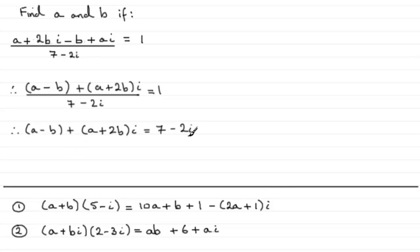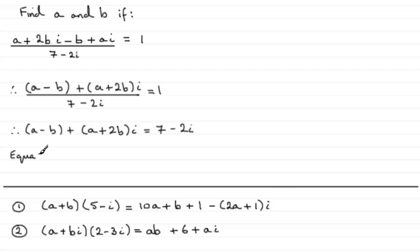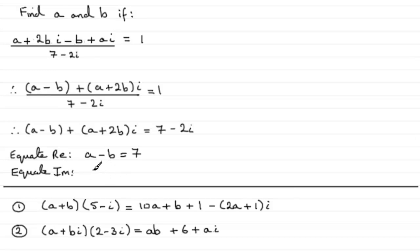When you've reduced it to this form on one line, we can start to compare the real parts and the imaginary parts. Because a minus b is the real part and it must be equal to 7, and the imaginary part a plus 2b must equal minus 2. So if we equate the real parts, we get a minus b equals 7, and if we equate the imaginary parts, we get a plus 2b equals minus 2.